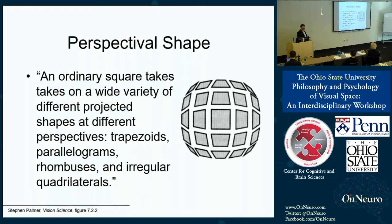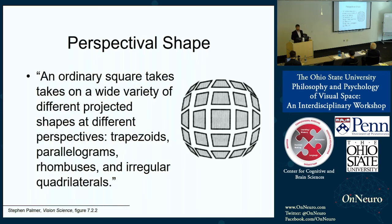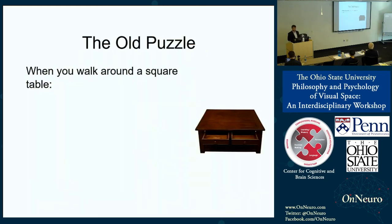If you imagine that these squares are coffee tables, the idea is that how they appear to you will vary depending on your perspective. If you're looking from above, the table may appear square, but if you're looking at it from the side, it's likely to look non-square — for example, trapezoidal.